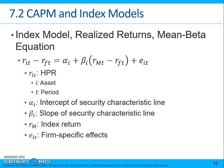E_IT represents firm-specific effects. We rewrite the equation so that the expected return for security I in period T minus the risk-free rate is equal to the alpha for that security plus the beta for that security multiplied by the excess return on the market.